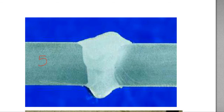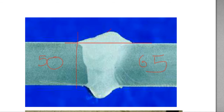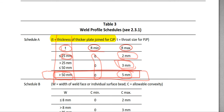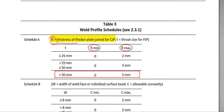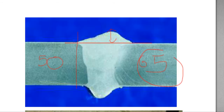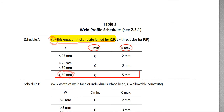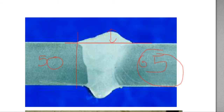Now, assuming the thickness on the left side is 50 millimeters and on the right side is 65 millimeters, the acceptance criteria for the reinforcement applies to the thicker plate. According to the lowercase t definition — thickness of the thicker plate joint for CJP — the thicker plate thickness applies. So 65 millimeters, which is greater than 50 millimeters, means the maximum reinforcement is 5 millimeters. Six millimeters of reinforcement is not acceptable, but 4 millimeters is acceptable.